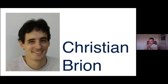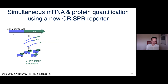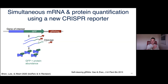I tackled this by hiring a great postdoc: Christian Brion, who joined from Joseph Schacherer's lab in France. Christian designed a beautiful reporter system that measures mRNA and protein for a given gene in the same cells at the same time. For protein, the approach is straightforward — GFP fusions from the existing yeast GFP library, where green fluorescence measures protein abundance.